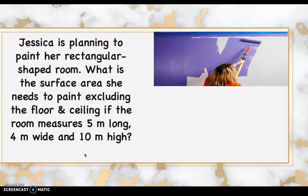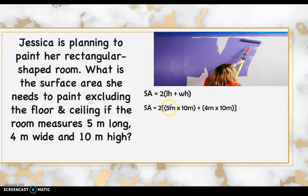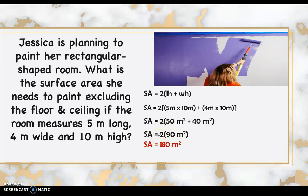Next: Jessica is planning to paint her rectangular room. What is the surface area she needs to paint, excluding the floor and ceiling, if the room measures 5 meters long, 4 meters wide, and 10 meters high? Since the floor and ceiling are excluded, we only find the lateral area using: 2 times (length times height plus width times height). Substituting: 5 times 10 is 50, plus 4 times 10 is 40, giving 90, then times 2 equals 180 square meters.